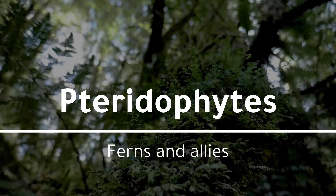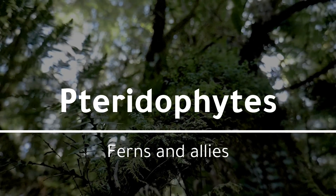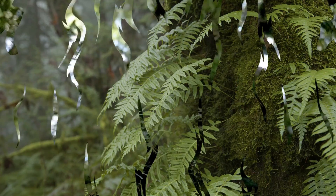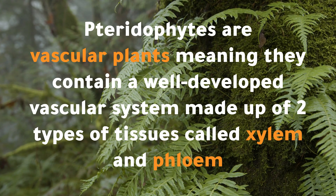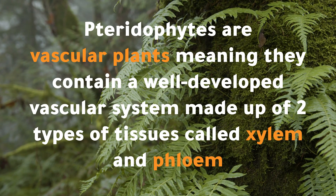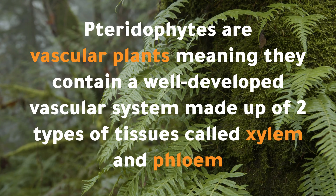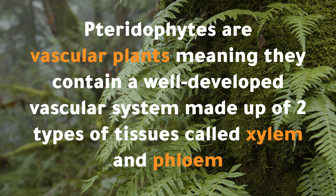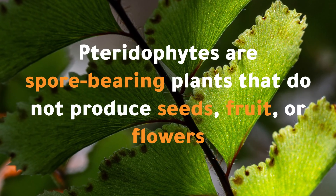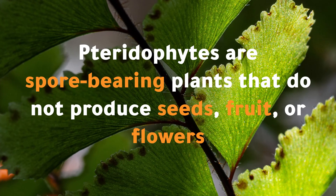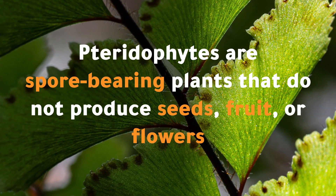The group pteridophytes is the fern and allies group. Pteridophytes are vascular plants, meaning they contain a well-developed vascular system made up of two types of tissues called xylem and phloem. Pteridophytes are spore-bearing plants that do not produce seeds, fruit, or flowers.